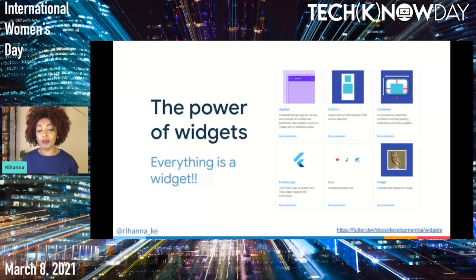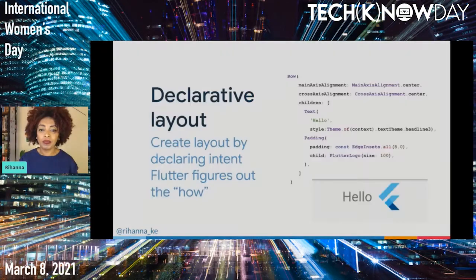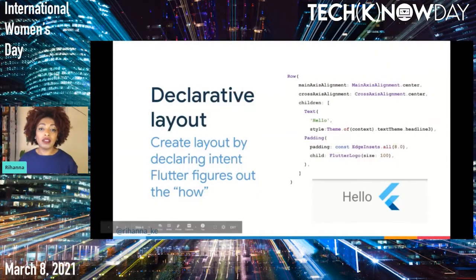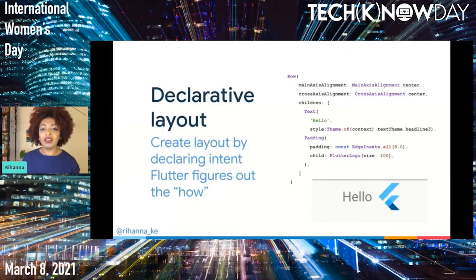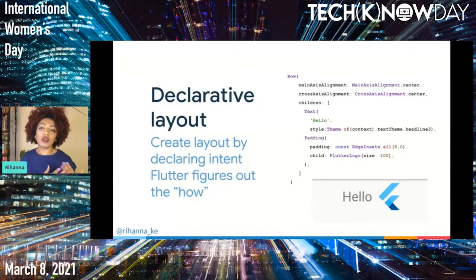Developing a Flutter app means composing and nesting widgets to build more complex widgets. And we compose and create our widgets in a declarative way. In Flutter, we create layout by declaring intent. We create a nested tree of widgets in code. We use parameters to indicate desired look and behavior, and we just let Flutter figure out the how. Here are snippets of code showing the corresponding UI with the hello text and Flutter logo you see in the slide.